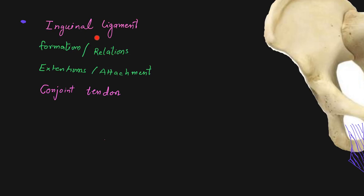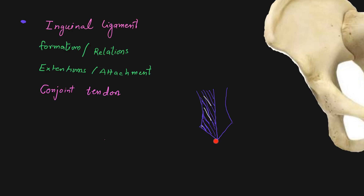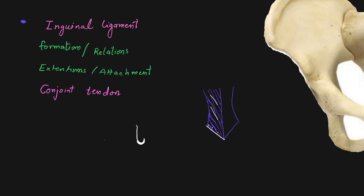In this video on the inguinal ligament, we will see its formation, relations, extensions, and attachments, along with some detail about the conjoint tendon. To learn the inguinal ligament, we first look at the anterior abdominal wall. This shows the external oblique muscle, the outermost muscle layer. As this muscle comes nearer to the inguinal fold, the aponeurosis gets thickened and folded backward, and this thickening and folding forms the inguinal ligament.